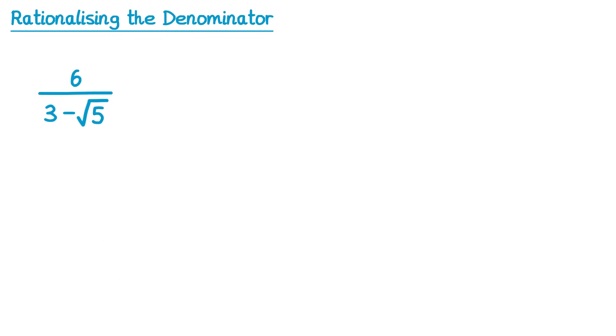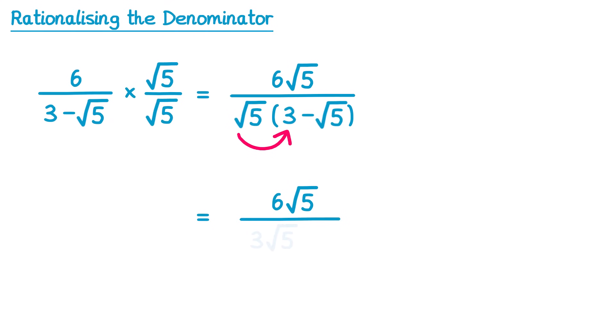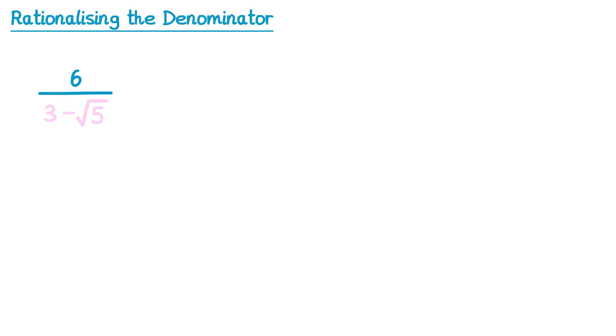We're now going to look at examples where the denominator contains two terms, like this one here: 3 subtract root 5. Your first instinct here is to probably multiply by root 5 over root 5. Let's see what happens. Well on the top we do 6 times root 5, which is 6 root 5, and on the bottom we need to use a bracket, so we've got root 5 times 3 subtract root 5. Expanding that bracket: root 5 times 3 is 3 root 5, and root 5 times negative root 5 is negative 5. Unfortunately we still have a root 5 on the bottom, which means our denominator is not rational — it's irrational. And this is not what we were trying to do, so something went wrong in our method.